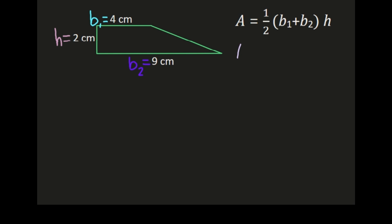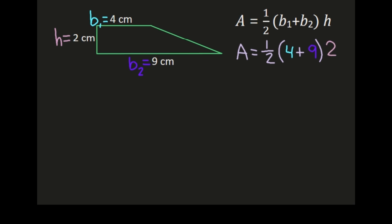Now we can start using our formula and plugging these values in. Area equals one-half times our base one — base one was four centimeters — so we'll substitute four centimeters in for B1, plus base two which was nine centimeters. Then we have our height of two centimeters, so we'll substitute two in for H in our formula. This gives us one-half times, in parentheses, four plus nine, times two.